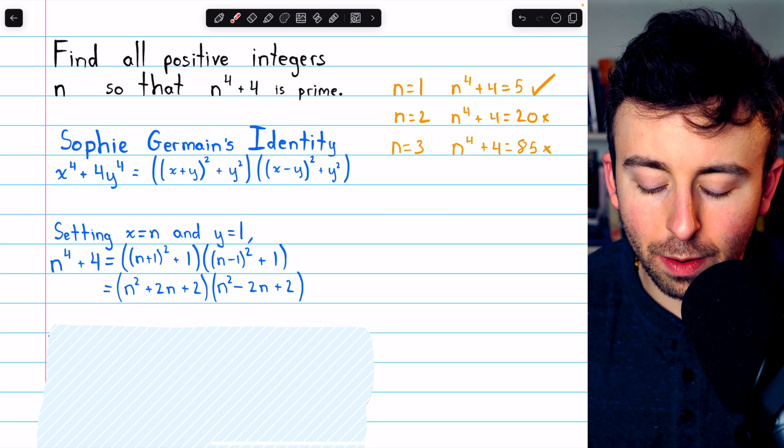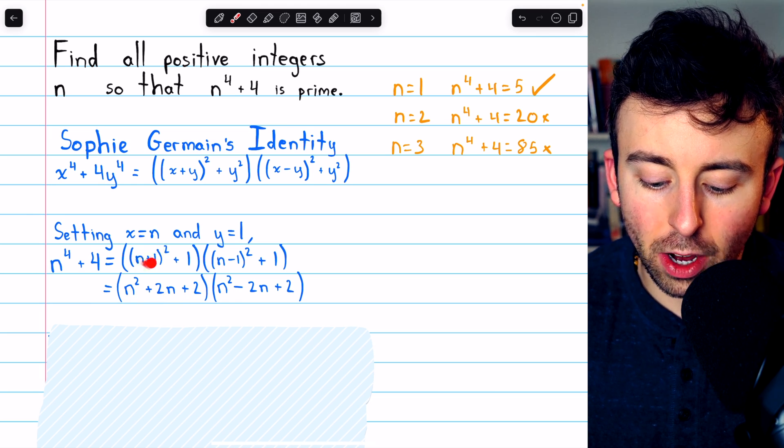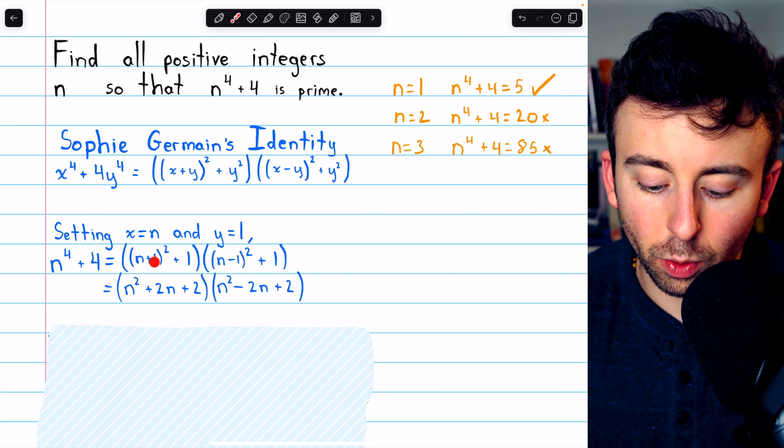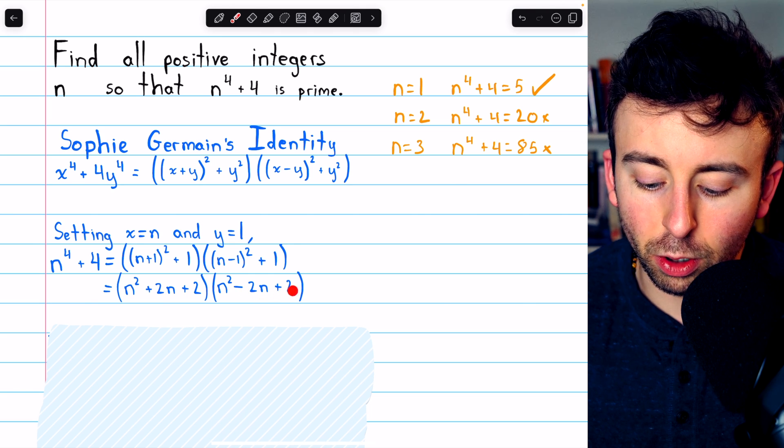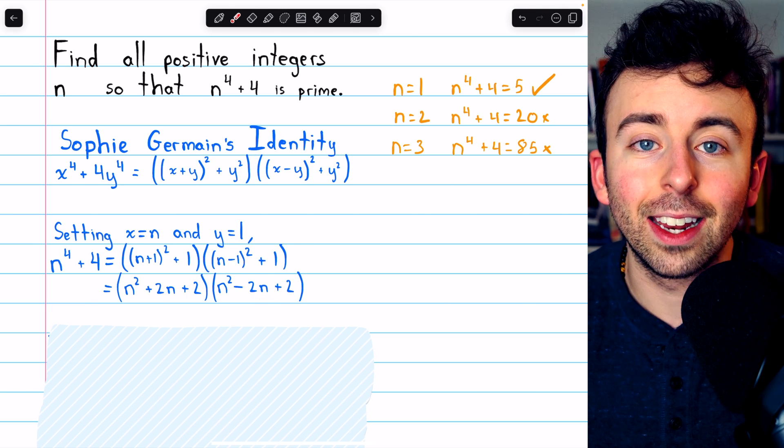And this is equal to n squared plus 2n plus 2, expanding the binomial and combining the 1 with that 1 squared. And this is getting multiplied by n squared minus 2n plus 2, again, expanding the binomial and simplifying.